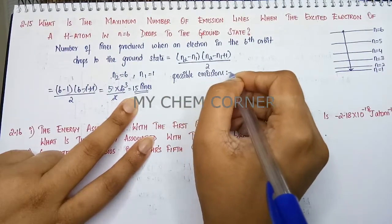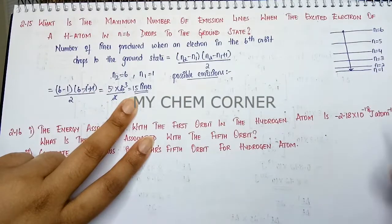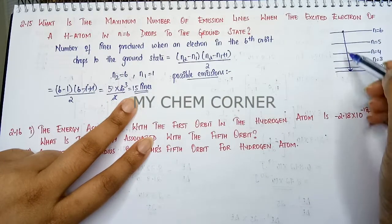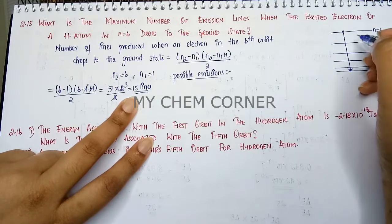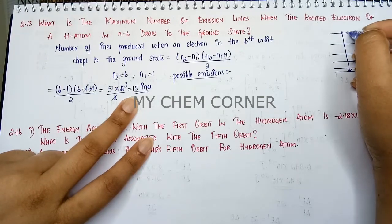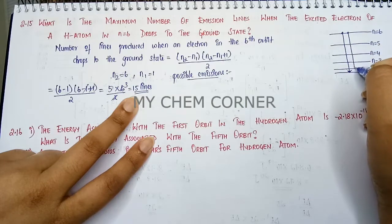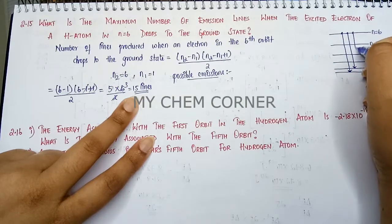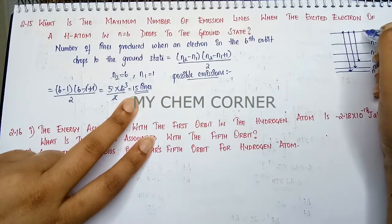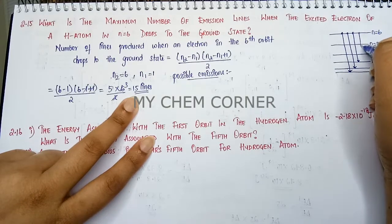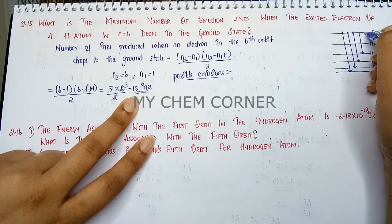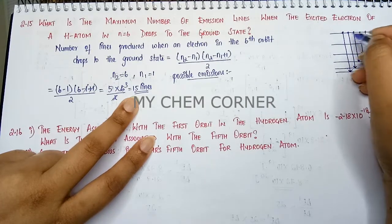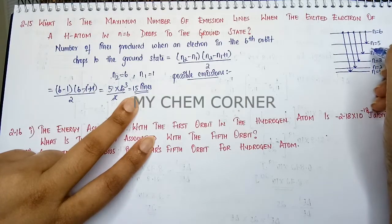The possible emissions here will be that when you look at this line, it can move from 6 to 1, it can be from 6 up to 2, then it can fall from 6 to 3.